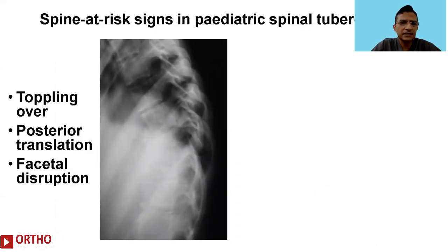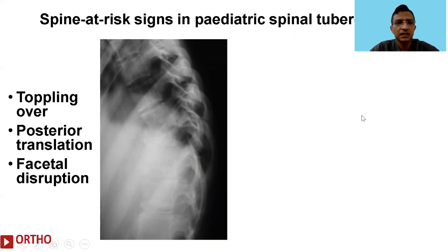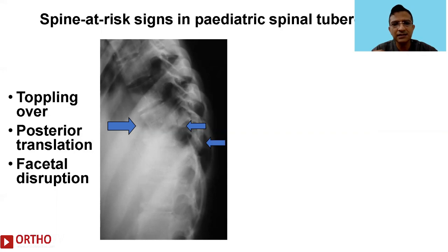Following drainage, there was a satisfactory outcome with normalization of the soft tissue shadow at that level. We are also interested in features of instability — most of us are aware of the 'signs at risk' in pediatric spinal tuberculosis. There are four signs; three are seen on the lateral x-ray: toppling over, posterior translation, and facetal disruption. The fourth — lateral translation — is seen on the anteroposterior x-ray.